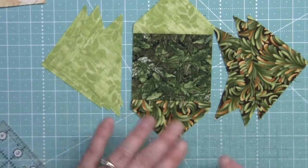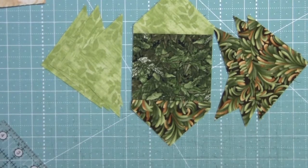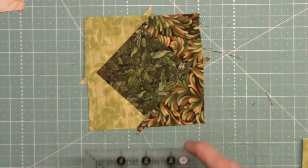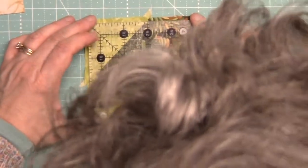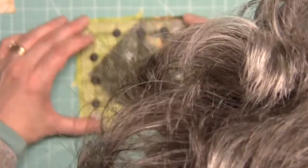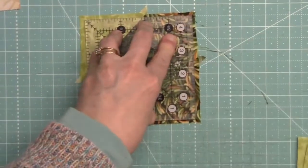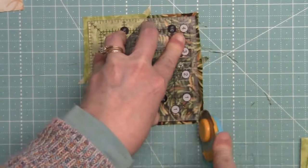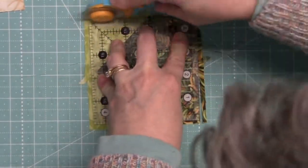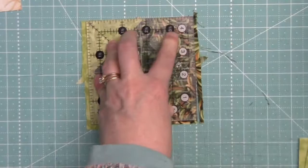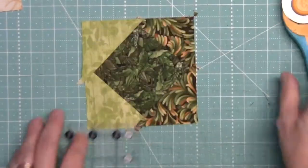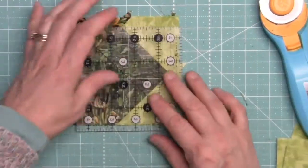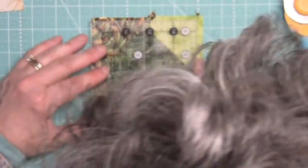So I'm going to trim up the rest of these dog ears and press and I'll be back here to trim them up. And there you have it. There's a square in a square unit with the fabric B and F triangles and just like we did for the fabric A and E square in a square units, we're just going to center up our ruler so that we have the points of the inner square at the two and a quarter inch marks which of course is made easy for me using this four and a half inch square ruler.